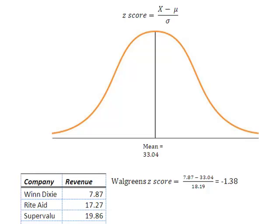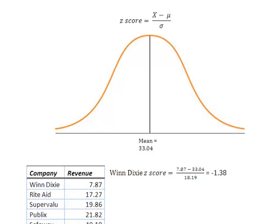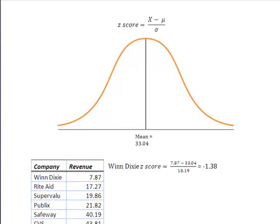So I'm going to start with Winn-Dixie. And all I'm going to do is take the value of x, which is their revenue, minus the mean, which we found earlier, the mean revenue. And I'm going to determine how far is the Winn-Dixie x, or revenue, from the mean or average revenue, and express it to me in the units of standard deviation. We calculated earlier that the standard deviation was 18.19.